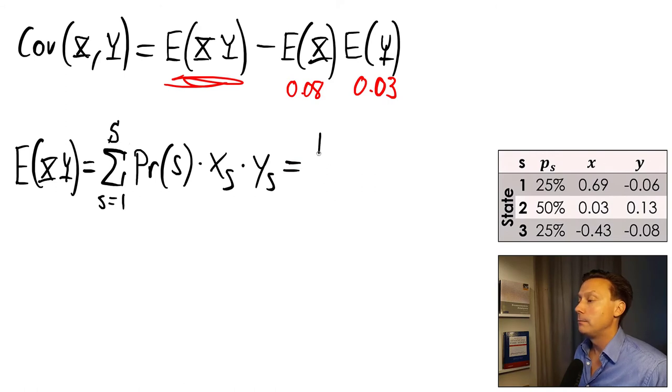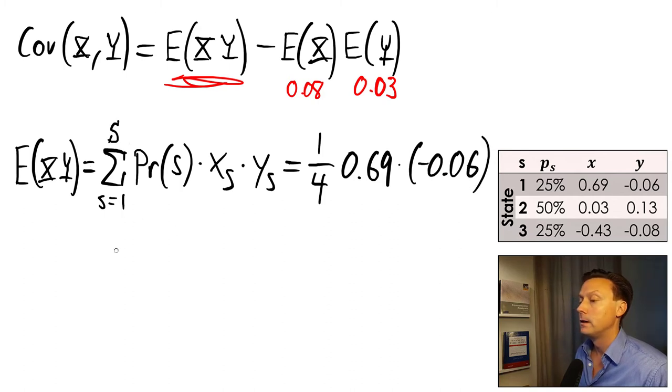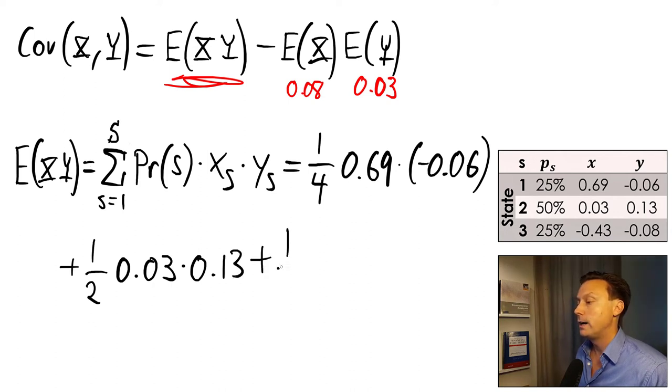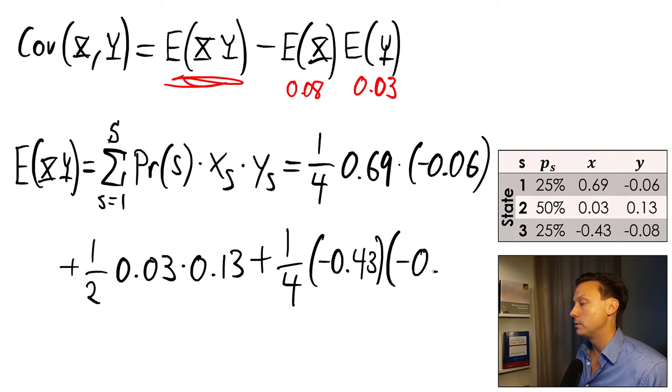The first possible outcome we're going to end up in one fourth of the time. And there we have that X is 0.69 times the negative 0.06 of the Y variable. We need to add the second outcome which is going to happen one half of the time, where the first asset is going to return 3% and the second asset is going to return 13%. Plus the third outcome at one fourth of the time where X is negative 0.43 and Y is negative 0.08.